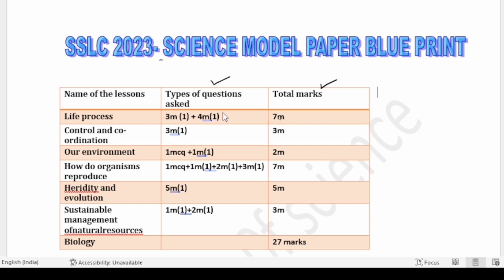Let us start with the content. Firstly, the Life Process lesson has one three-mark question and one four-mark question in the model paper — so the total marks from Life Process is seven marks. Moving to Control and Coordination, one three-mark question is given, so totally three marks are allotted to this lesson. Moving to Our Environment, one MCQ and one one-mark question are given, totally two marks allotted.